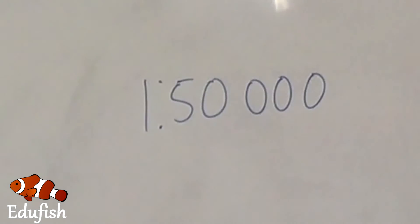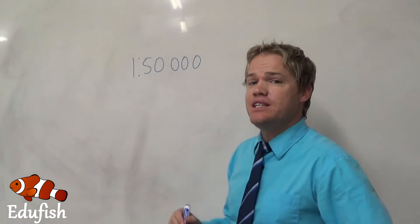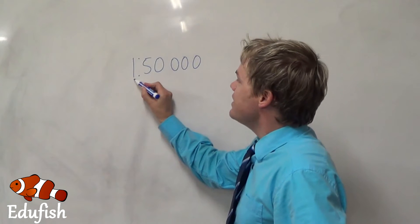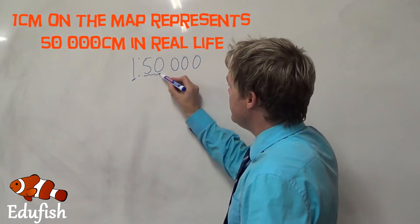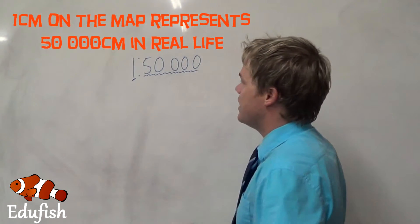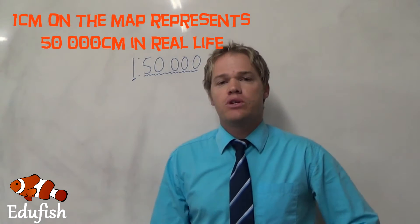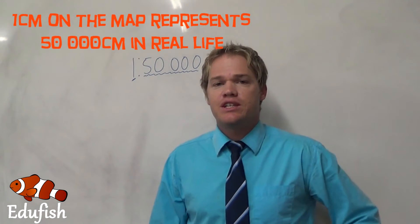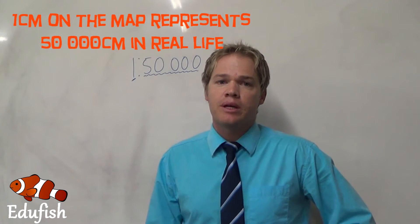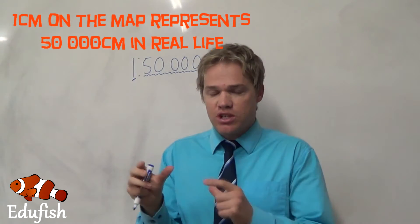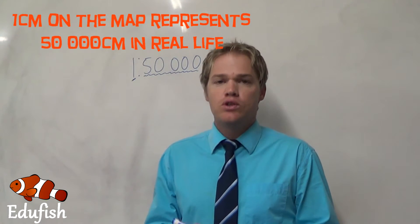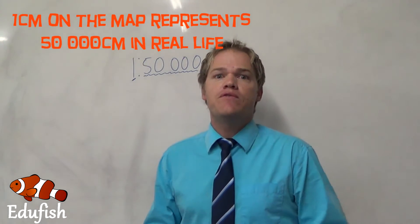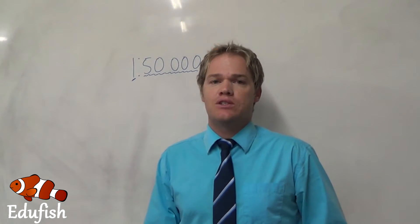So here's my ratio scale: 1 to 50,000. What it basically says is that 1 centimeter on your map represents 50,000 centimeters in reality. In other words, if you take your ruler and you measure exactly 1 centimeter on your map, then if you go to that specific place in real life, you will find that it is 50,000 centimeters.